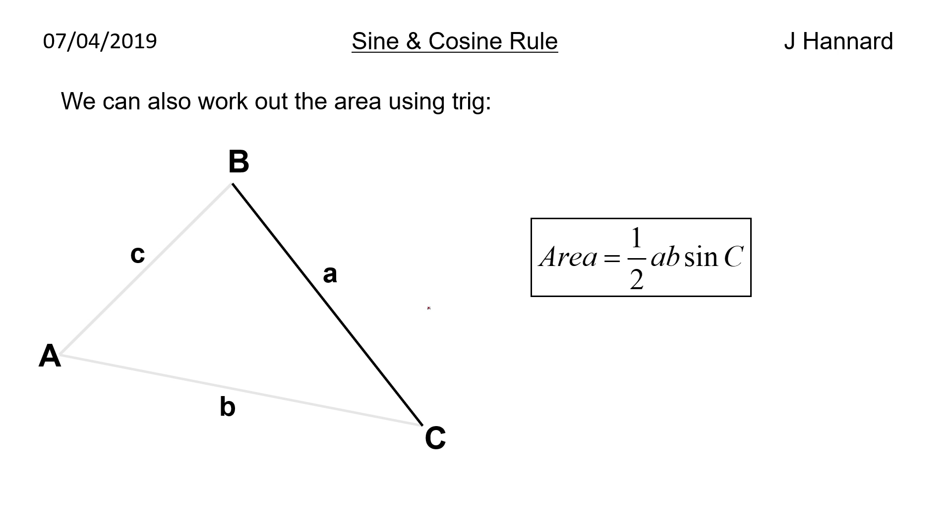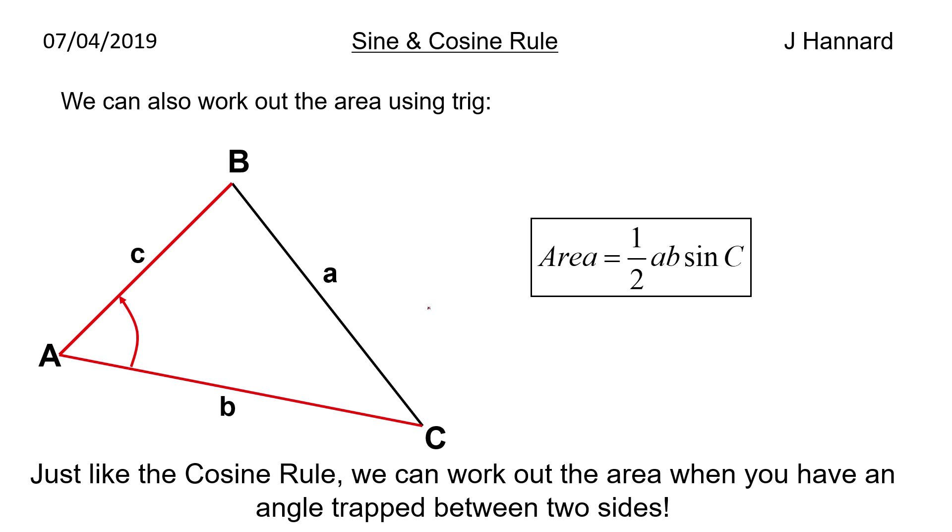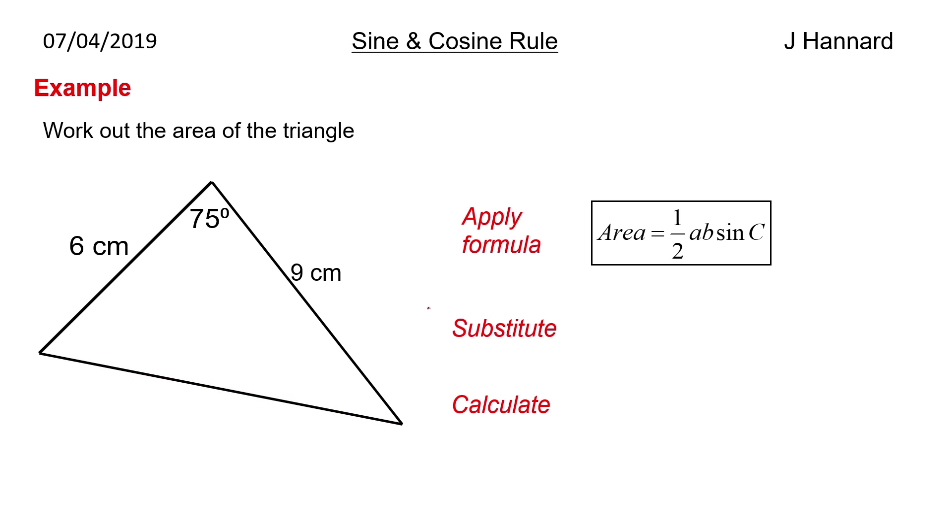We can also work out the area of a triangle using trig. So, area equals a half ab sine C, and just like the cosine rule, we can work out the area when you have an angle trapped between two sides. So, here's an example then. We've got 6 and 9 as our side lengths and we've got an angle 75, so we've got an angle trapped between two sides, so we can work out the area using the formula.